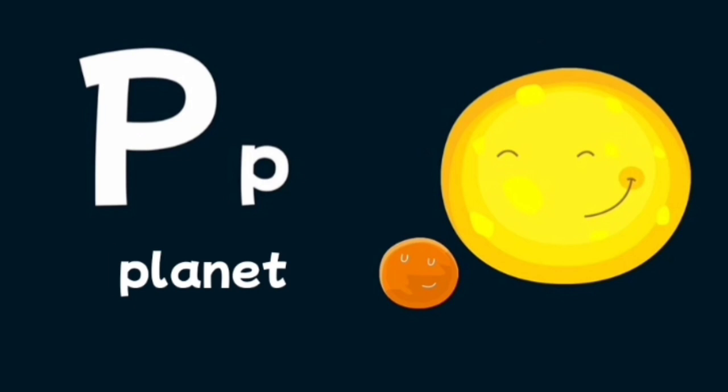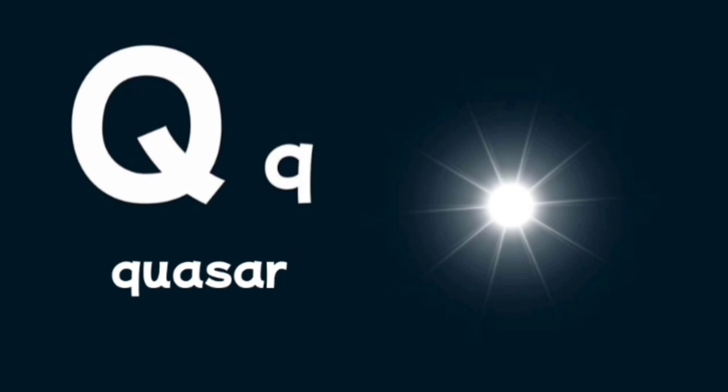P is for planet, a large body in outer space that circles around a star. Q is for quasar, a bright galaxy very far away.